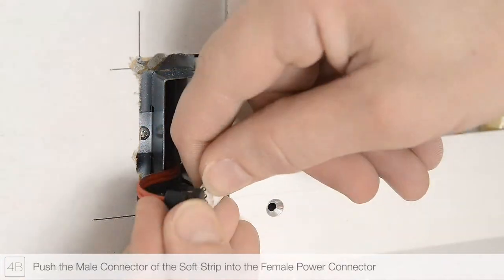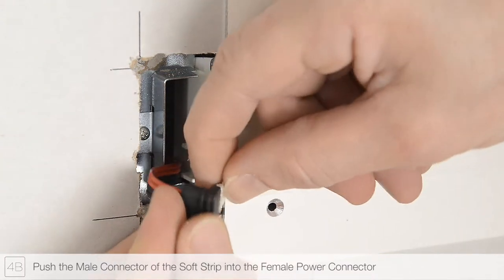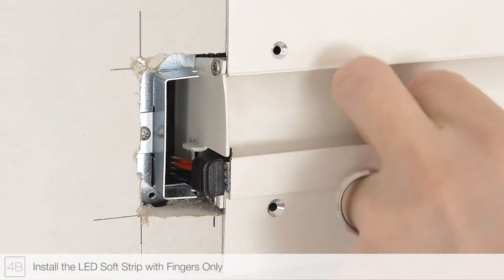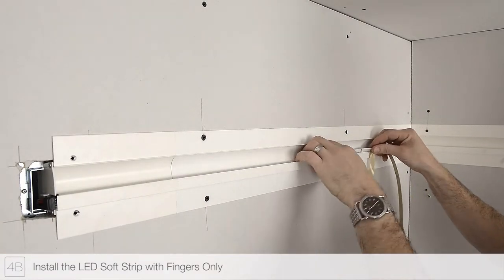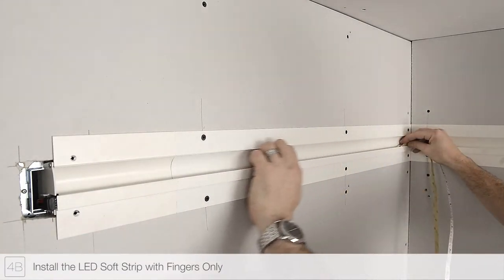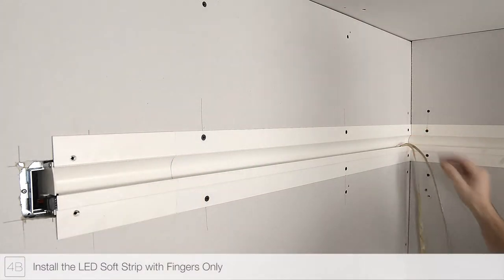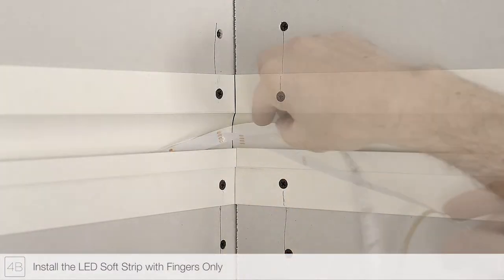Insert the power header into the flexible power connector. Gently press the adhesive backing of the soft strip into the channel while continuing to remove the paper backing. It is important when installing the soft strip that no tools or hard instruments are used that may cause damage.